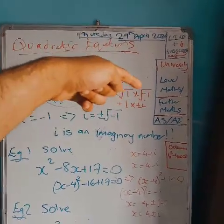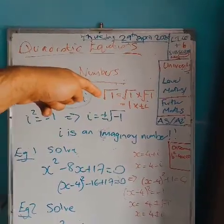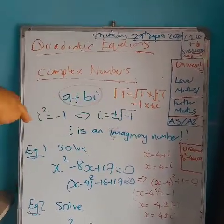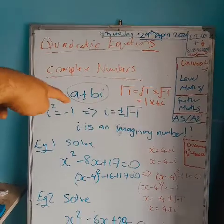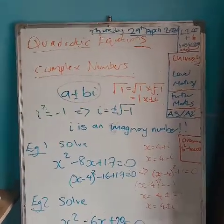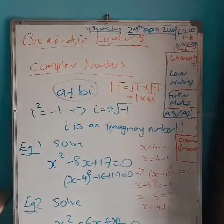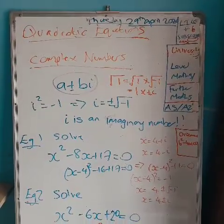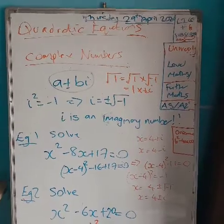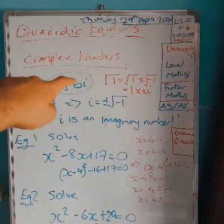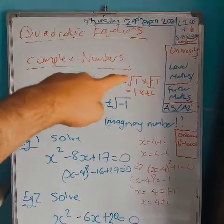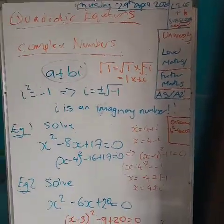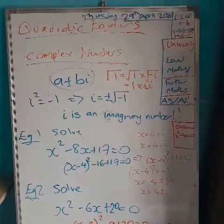The imaginary unit i is defined as the square root of minus one, so i squared equals minus one. This means i equals plus or minus the square root of minus one. You may also see it written as j in some textbooks. So i is an imaginary number, and the square root of minus one equals i.